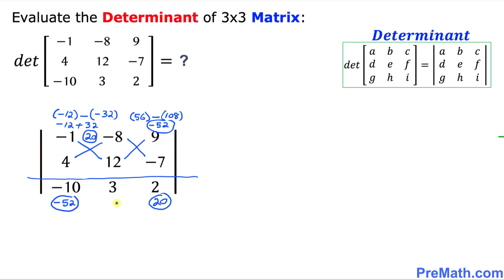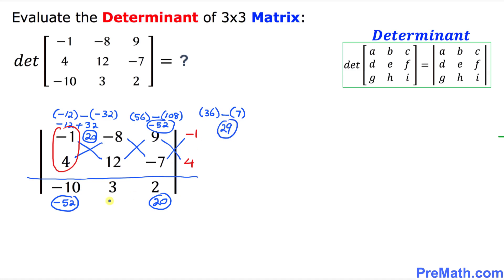Now let's look at this column on the left-hand side: negative 1 and 4. Copy and paste it over here: negative 1 and 4. Using the crisscross method again: negative 4 times 9 is going to be 36, then a minus sign, and negative 7 times negative 1 is positive 7. So 36 minus 7 is going to be 29. This 29 is written in the middle right up here.